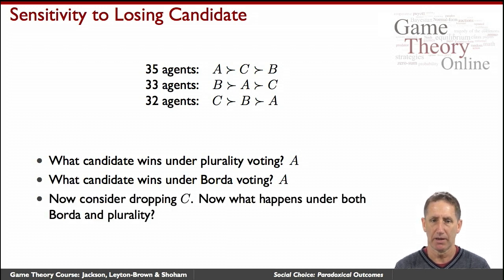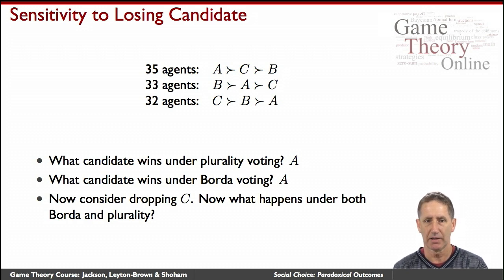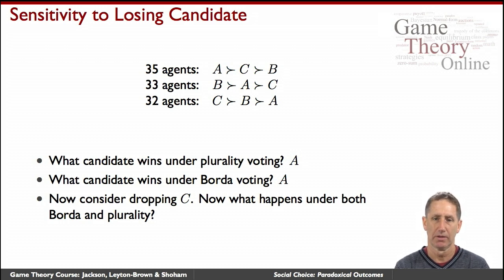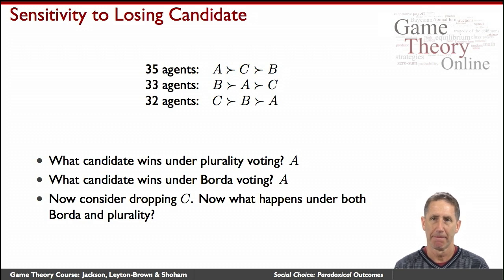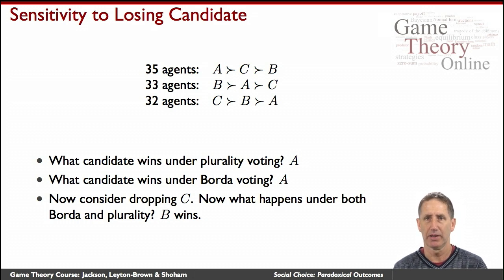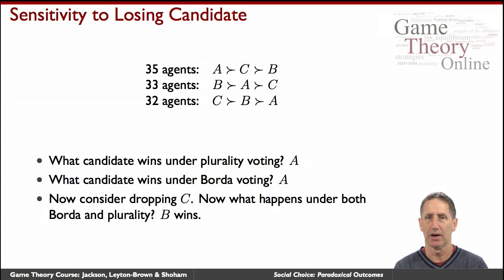But now what happens if C drops out? C realizes he has no chance of winning and drops out. Now under both plurality and Borda, B would win. So here you have a candidate with no chance of winning whose sole role is to change what would otherwise be the outcome of the election.